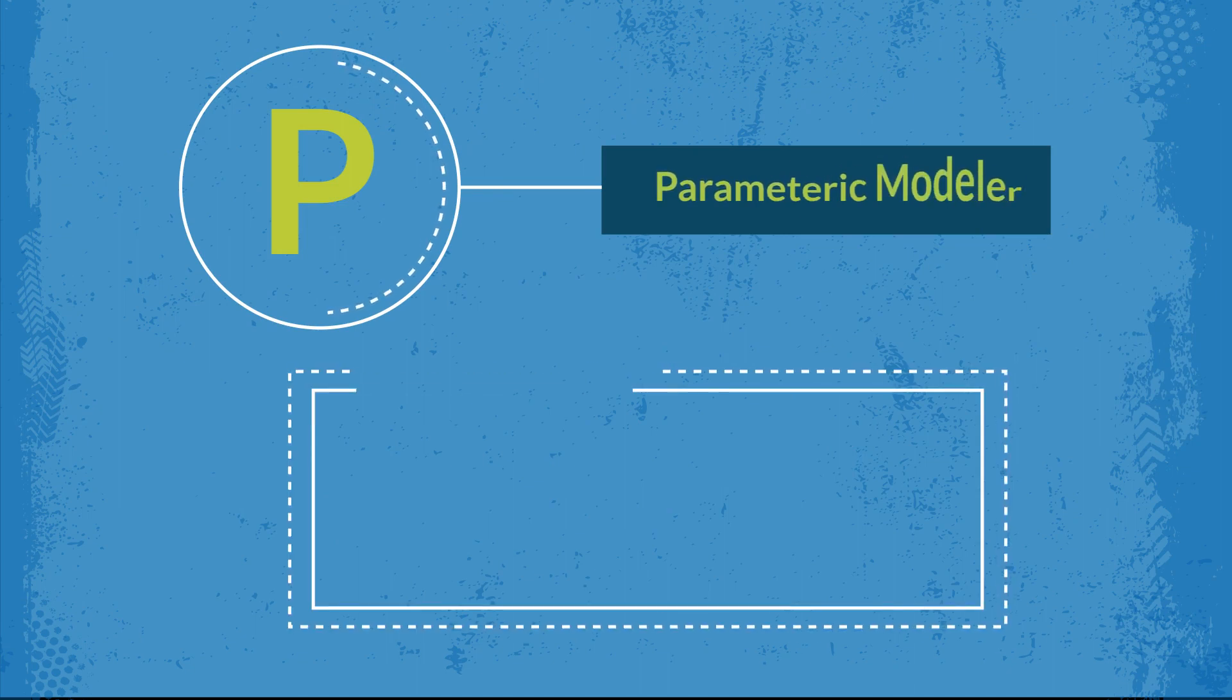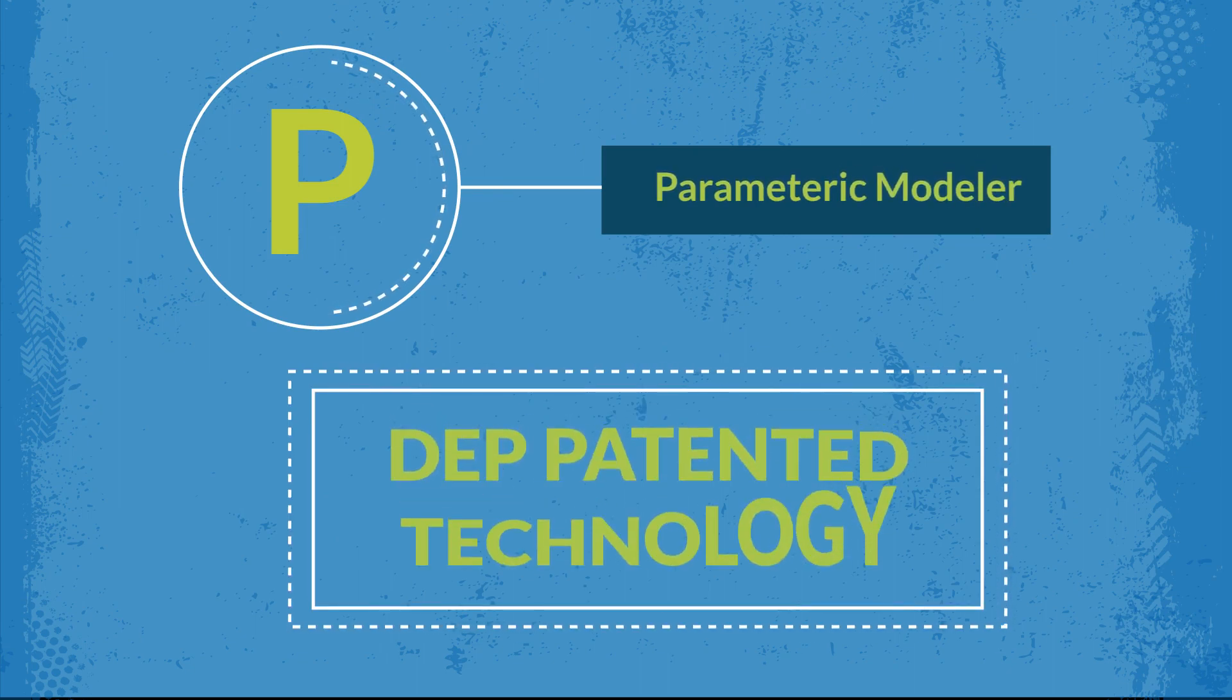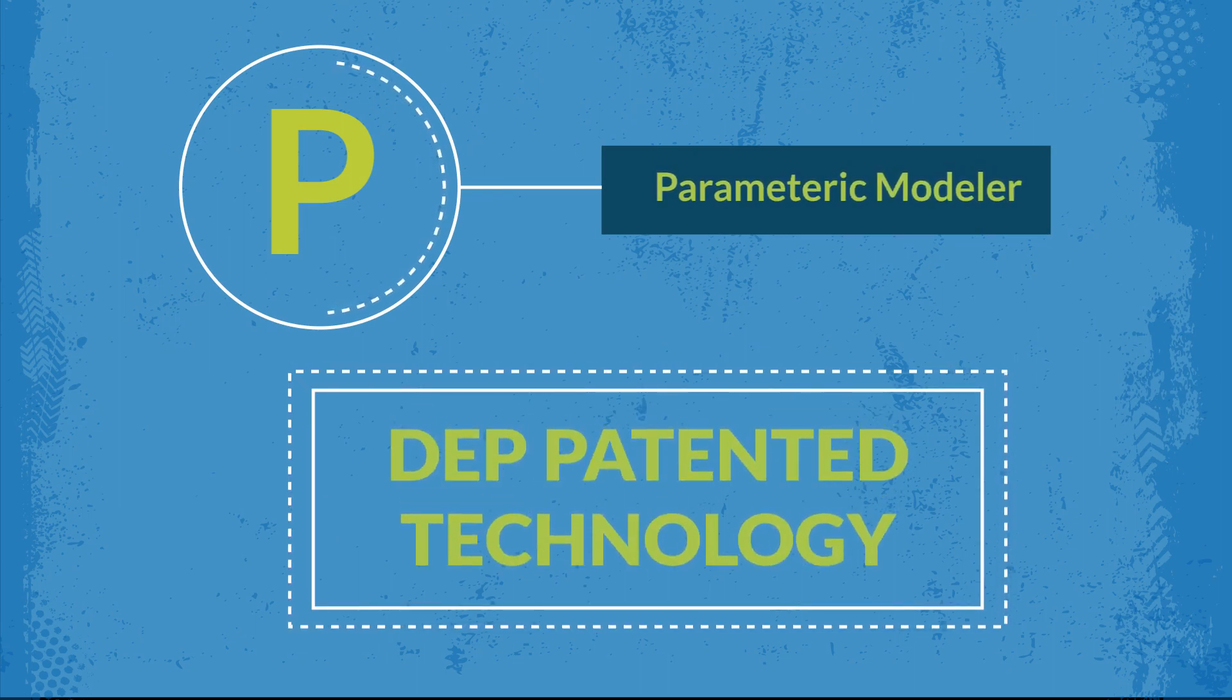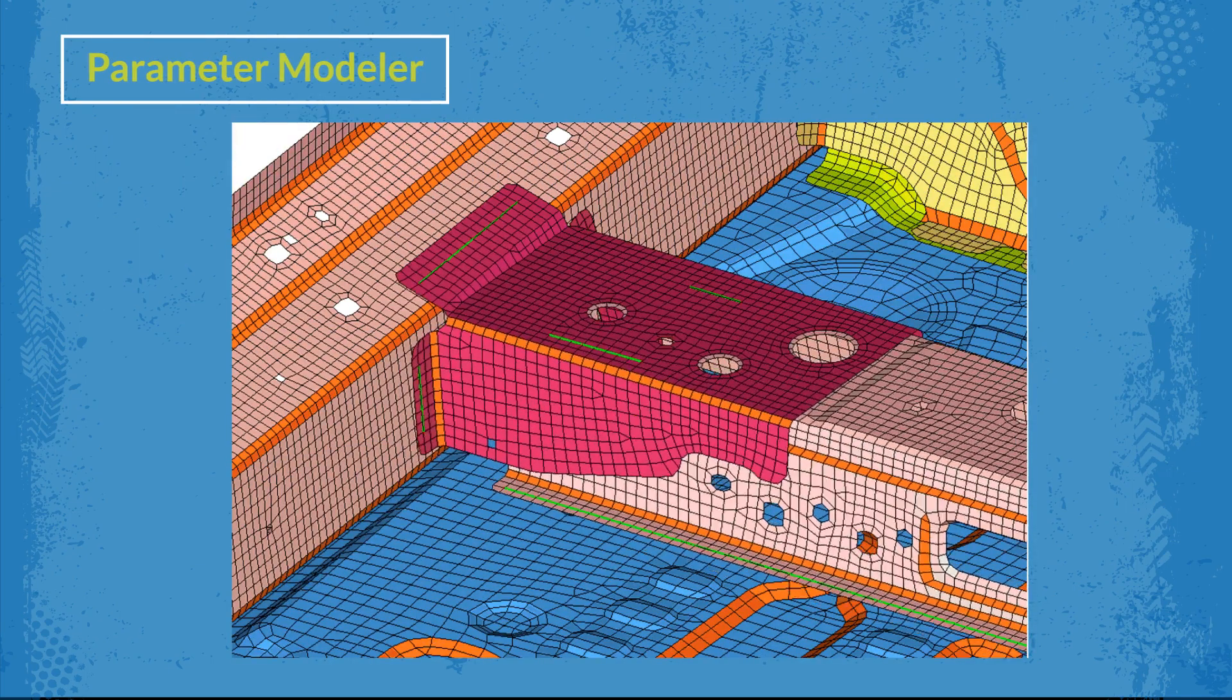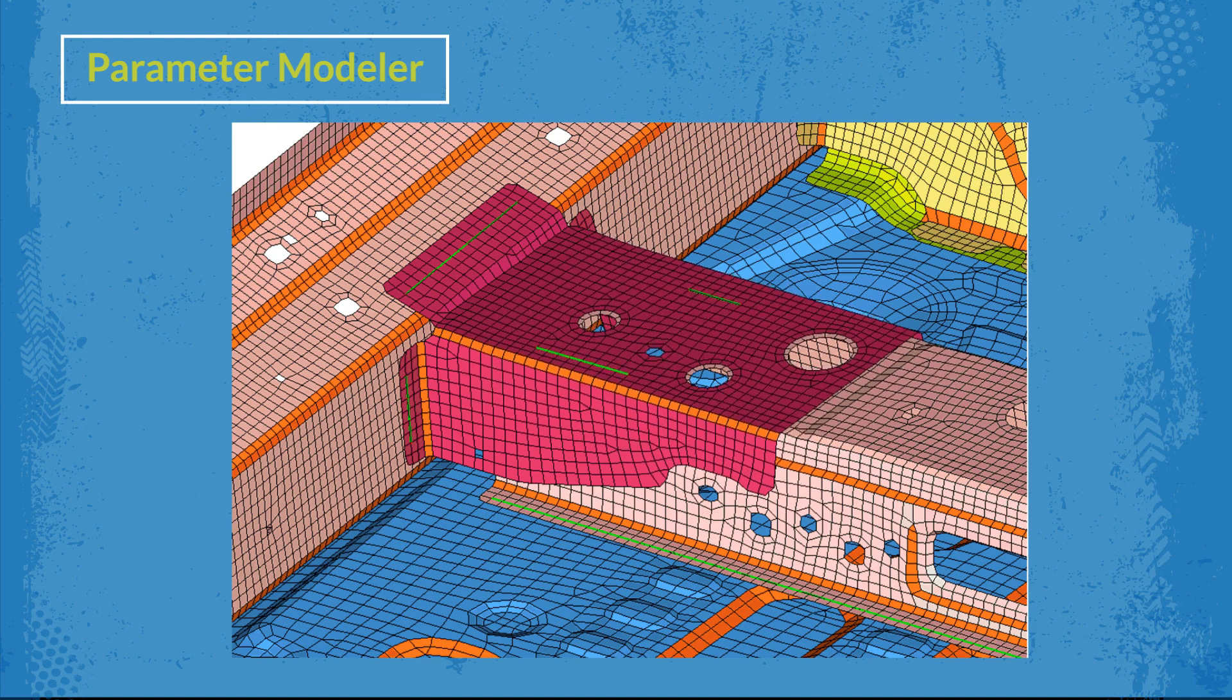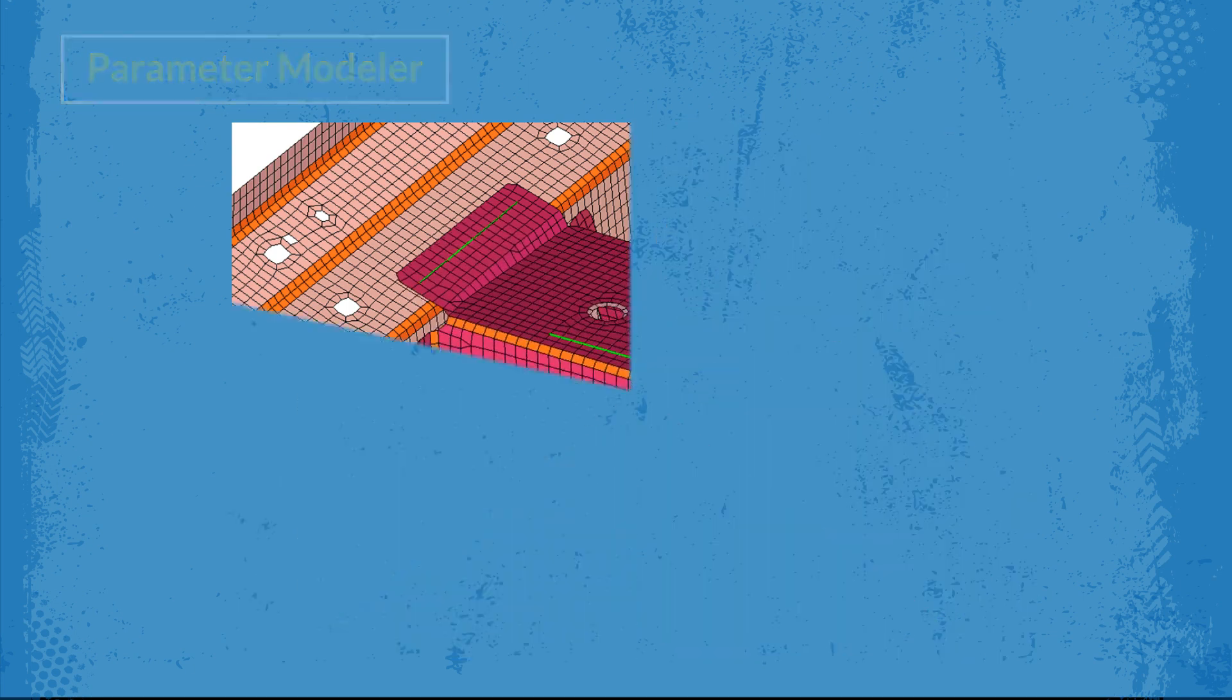P stands for Parametric Modeler. A patented technology of DEP that enables baseline CAE model created in Meshworks 8.0 automatically gets transformed into a parameter model, saving time and effort of parametrization.